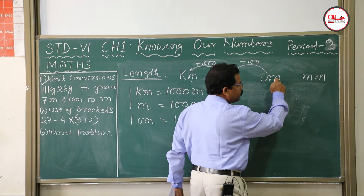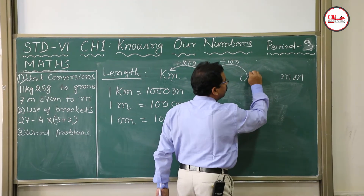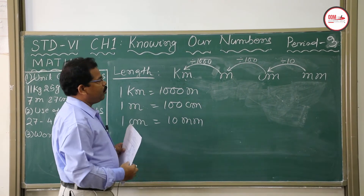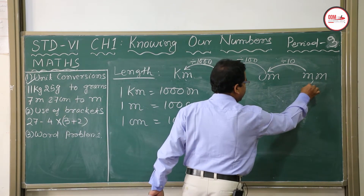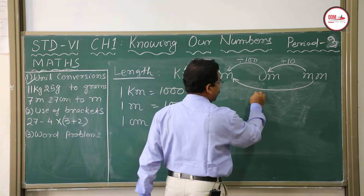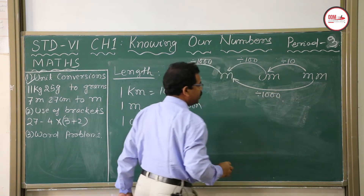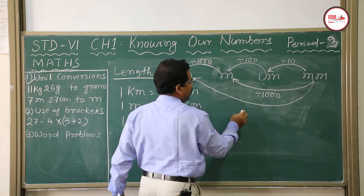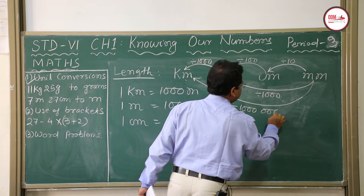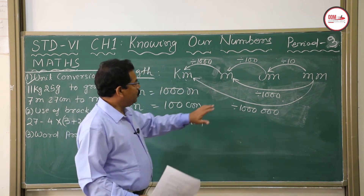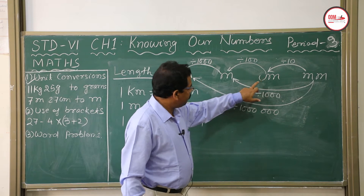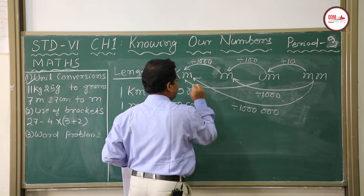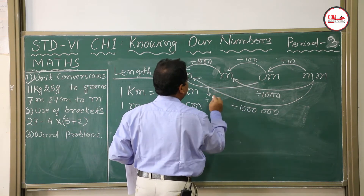Centimeter to millimeter is multiply by 10, so millimeter to centimeter is divide by 10. Millimeter to meter: divide by 1000. If you want to convert millimeter to kilometer, divide by 1 with 6 zeros. Centimeter to kilometer: divide by 1 with 5 zeros.